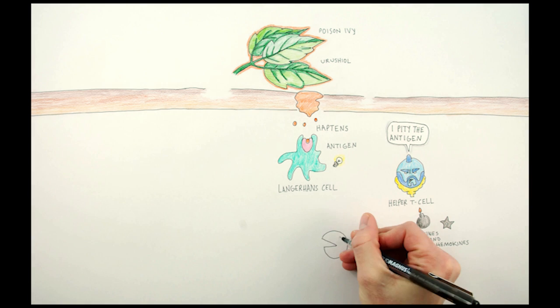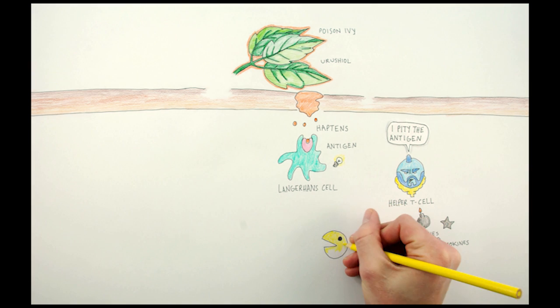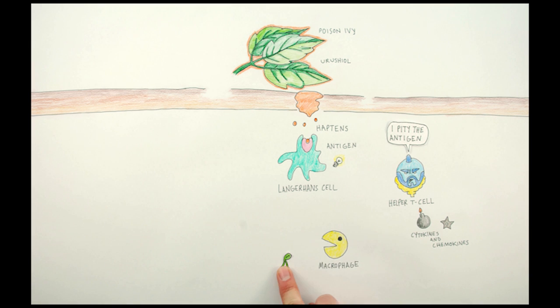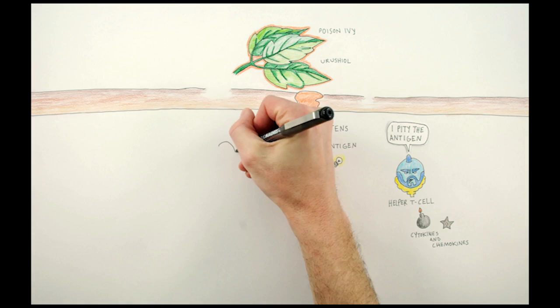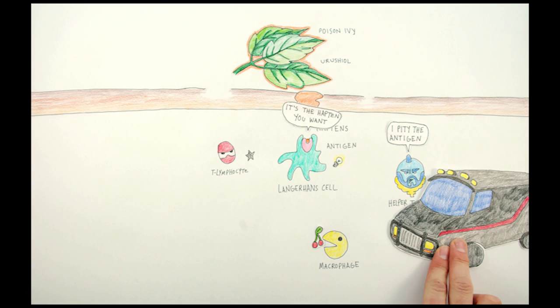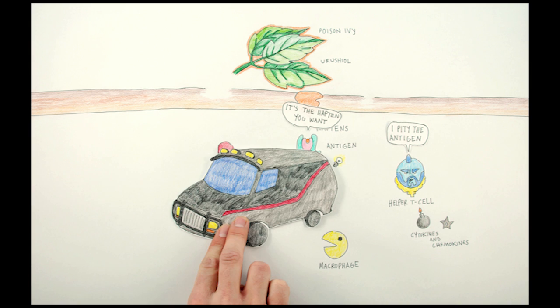This causes a cascade of events leading to itchiness and swelling. They also recruit cells called phagocytes, such as neutrophils and macrophages that eat up and remove debris, cell assassins called cytotoxic T-lymphocytes and natural killer cells, and more helper and memory T-cells.